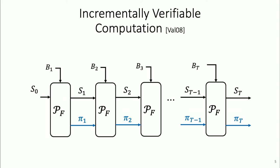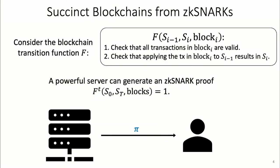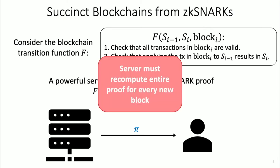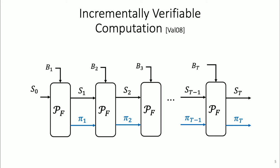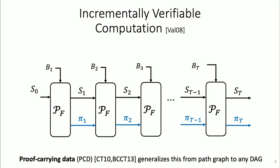The idea of Incremental Verifiable Computation is that I have a special type of computation: the same function f applied t times over and over again. The idea is that I can advance the proof at the same rate that I advance the computation. I start with state s0, apply f to get s1, s2, s3, and at every point I also have a proof pi_i that I advance. Proof Carrying Data is the generalization of this to not just a line graph but any DAG or more interesting computation.